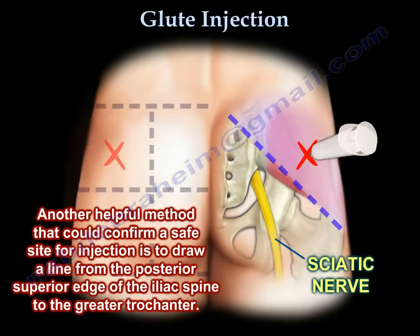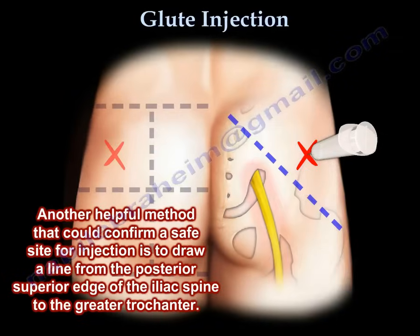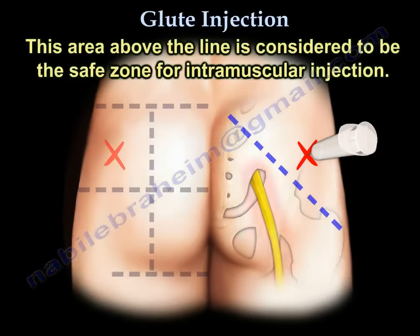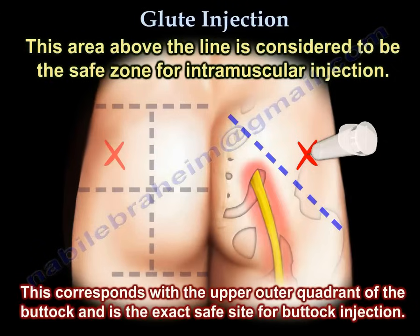Draw a line from the posterior superior iliac spine to the greater trochanter. The area above the line is considered to be the safe zone for intramuscular injection. This corresponds with the upper outer quadrant of the buttock — this is the exact safe site for the buttock injection.